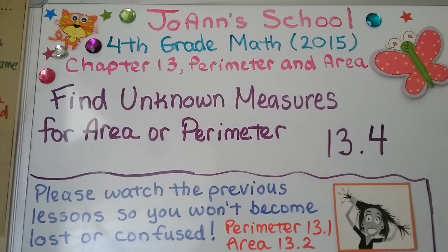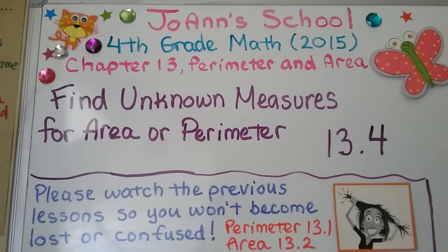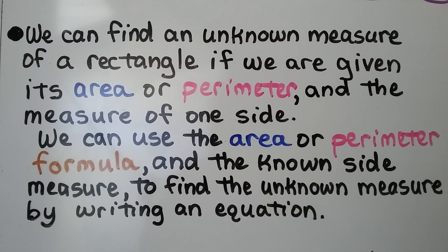Lesson 13.4 — we're going to find unknown measures for area or perimeter. We first learned about perimeter in video 13.1 and area in video 13.2. It's really important that you see those; they're linked in the description. We can find an unknown measure of a rectangle if we're given its area or perimeter and the measure of one side.